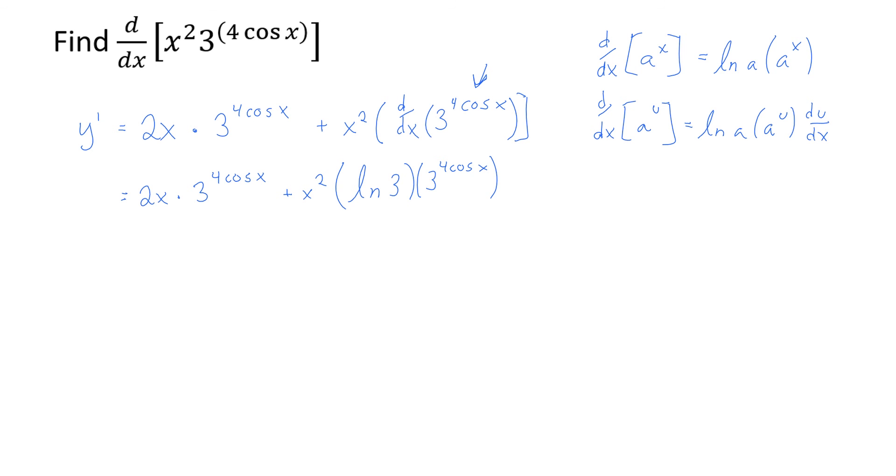And what is the derivative of 4 cosine x? Let's work that out off to the side real quick. Derivative of 4 cosine x is equal to 4 times negative sine x. Because we've got the derivative of cosine x being negative sine x. Therefore, this is all times a negative 4 sine x.